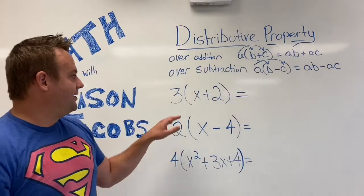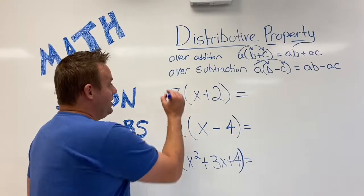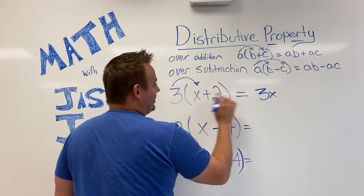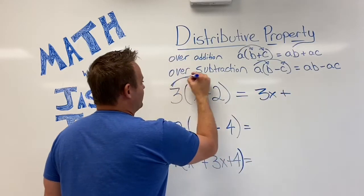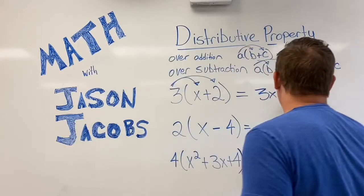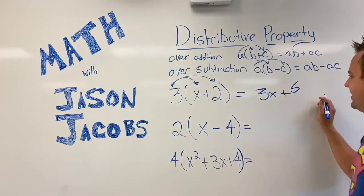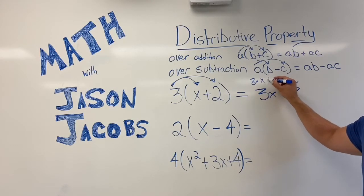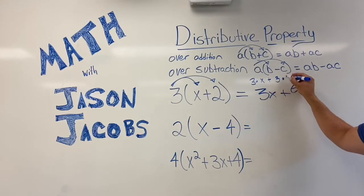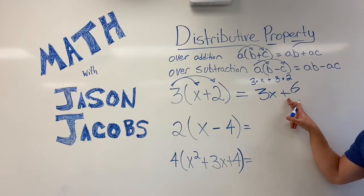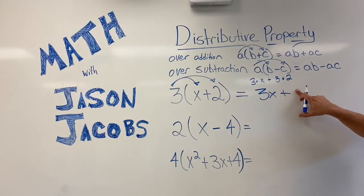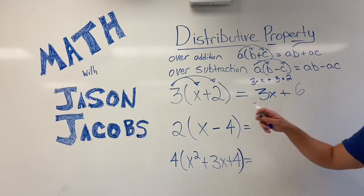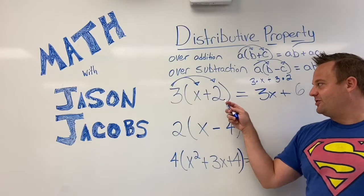So let's look here. This is the distributive property over addition. So we go 3 times X, well that's 3X, plus 3 times 2. 3 times 2, which is 6. So they might make you do this: 3 times X plus 3 times 2, and then go to that. So 3X plus 6. Again, the 3 distributes to the X, and the 3 distributes to the 2.